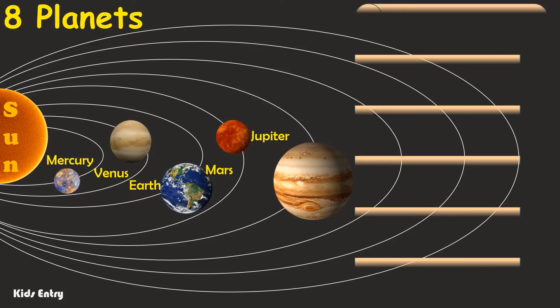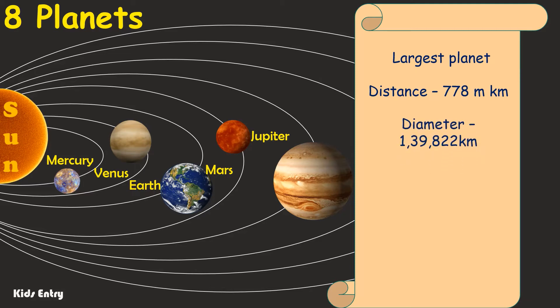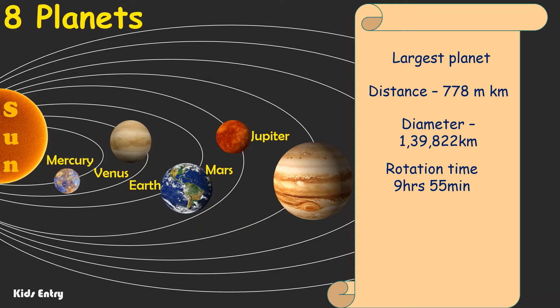Jupiter: it is the largest planet in the solar system. Distance from the Sun to Jupiter is 778 million kilometers. Its diameter is 139,822 kilometers. One day on Jupiter lasts 9 hours, 55 minutes. One year on Jupiter lasts 11.86 Earth years.